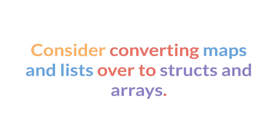In fact, structs and arrays are so much better than maps and lists that you should consider converting any map and list JSON data structures you have over to structs and arrays. This generally is not that much work. In most cases it's simply changing a few function names and changing the accessors — replacing map accessors with struct accessors, and replacing list accessors with array accessors, or no accessor at all in most cases.